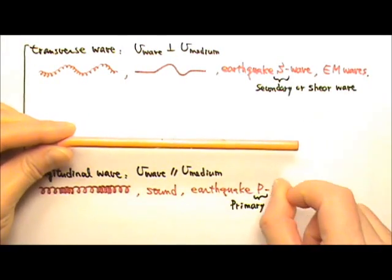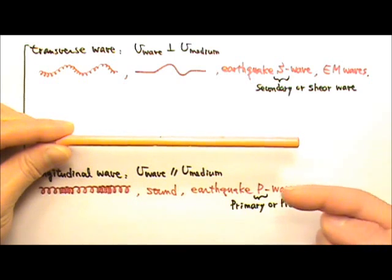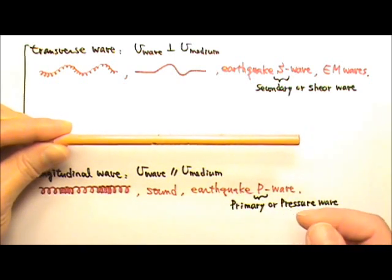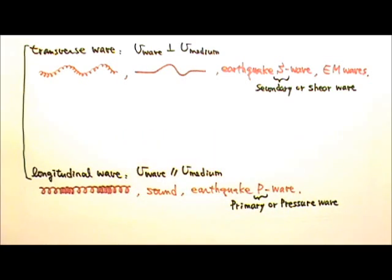Here I have a pencil. If I hit the pencil this way, I will have more transverse wave traveling down the pencil. If I hit the pencil this way, I will have more longitudinal waves traveling down the pencil. When a disturbance such as an earthquake happens on the ground, we get both types of waves.